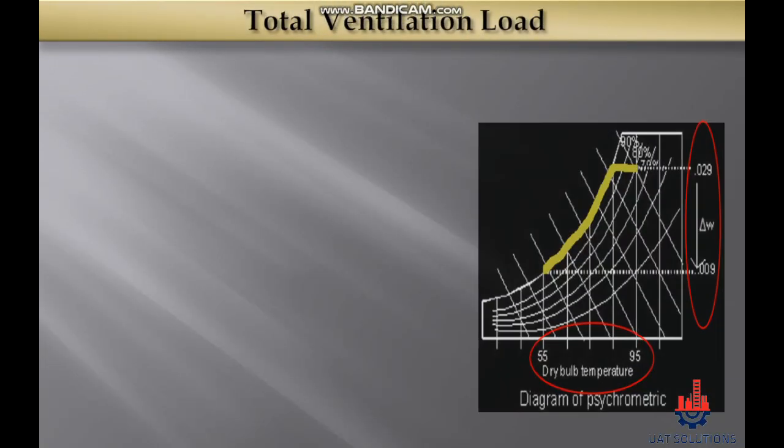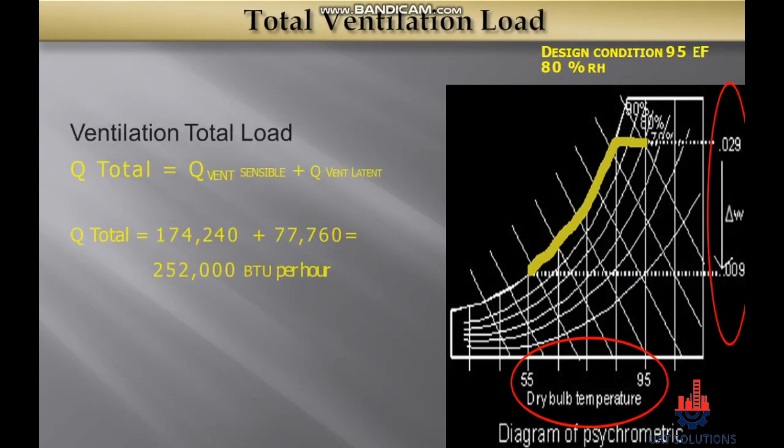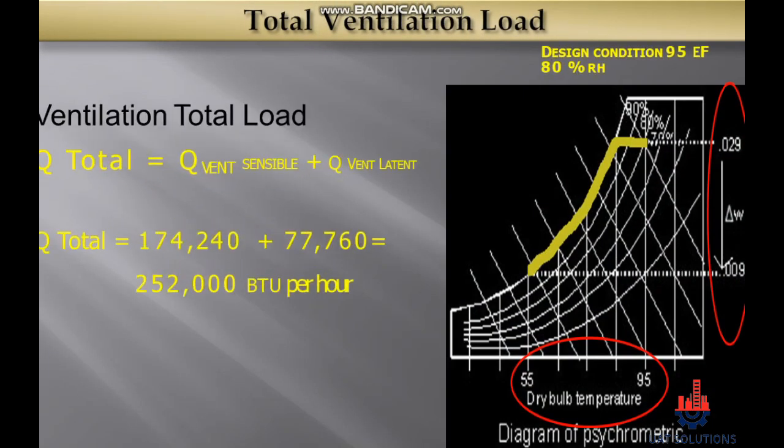Now that we have calculated and converted ventilation sensible and latent cooling load, let's combine them: 174,240 plus 77,760 equals a total of 252,000 BTU per hour.